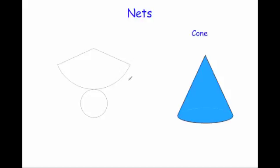Next, a cone. A cone consists of a curved surface and then a circle at the bottom. As you can see here, here's the circle for the bottom and this would then fold around to be the curved surface of the cone. So this is the net for a cone.